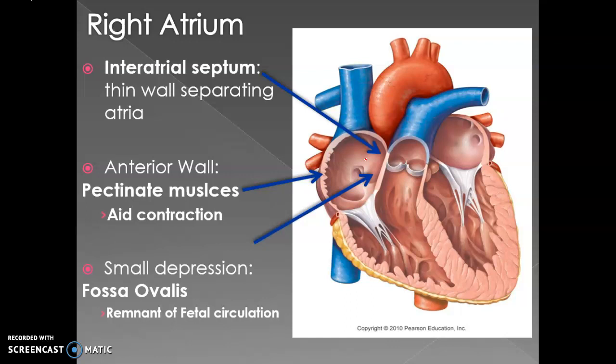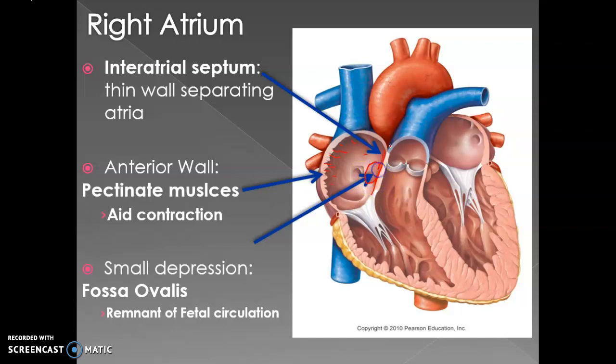Within the right atrium, between the right atrium and the left atrium, there is a partition called the interatrial septum. The general muscles of the atrium are called pectinate muscles. There is also a small depressed area called the fossa ovalis, which is a remnant of fetal circulation — we will cover this more when we get to fetal circulation in lab.